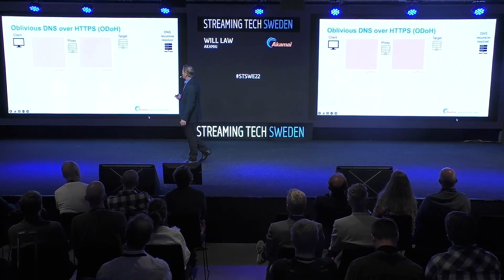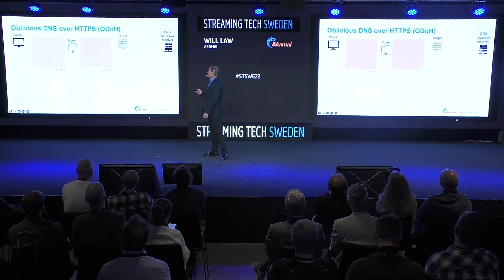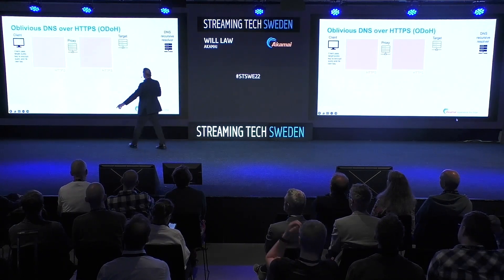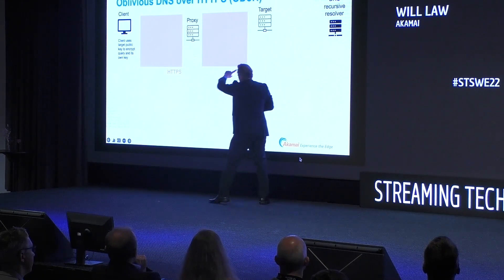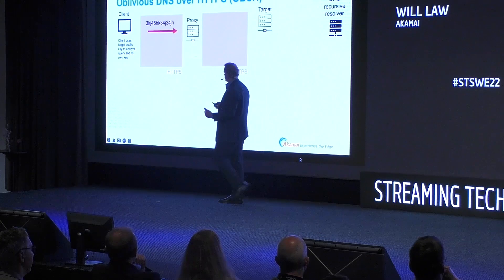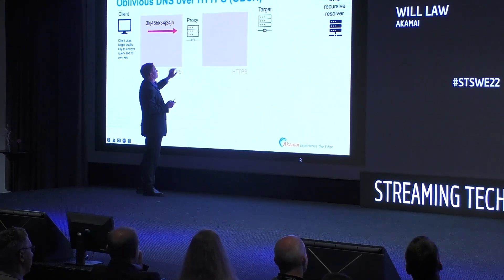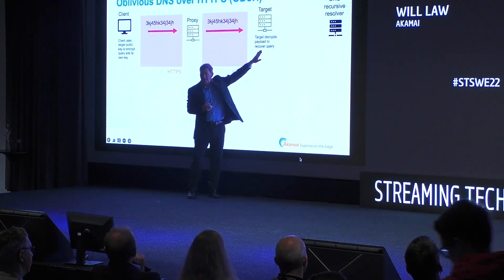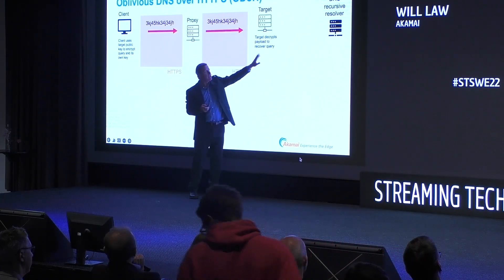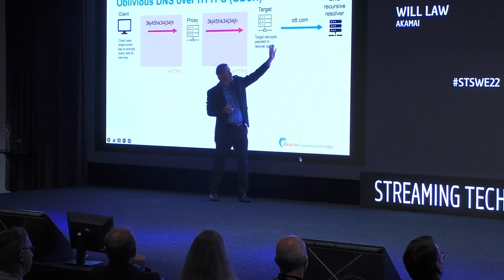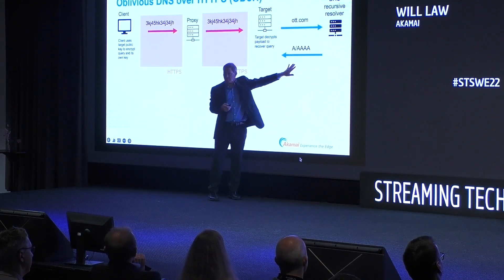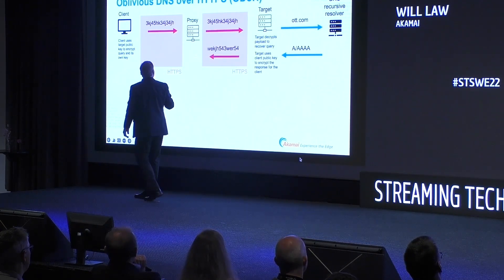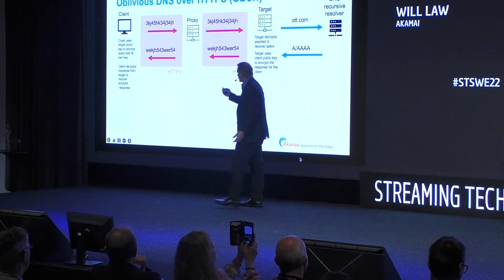So what can we do technically to try to introduce some level of privacy? This is called ODOH — Oblivious DNS over HTTPS — and it works in a pretty cool way. I have a client that wants to make a DNS lookup. There's a target that's actually going to do the lookup. It knows what the public key of that target is, so it encrypts what it wants to look up and sends an opaque package over HTTPS to a proxy server that's sitting in the way. That proxy relays it over to the target. The target can decrypt it because it has the other side of that key, and it says, oh, this client wants to know what ott.com is. So it goes to the DNS resolver, gets V4 and V6 records back, then encrypts the response using the client's public key, and the data moves back all the way to the client so the client can then get the record.